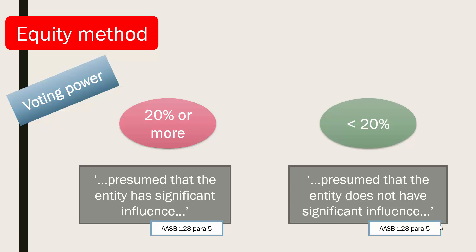Where the investing company holds less than 20% of the shares in an investee company, it is presumed there is no significant influence, unless there is clear evidence to the contrary.